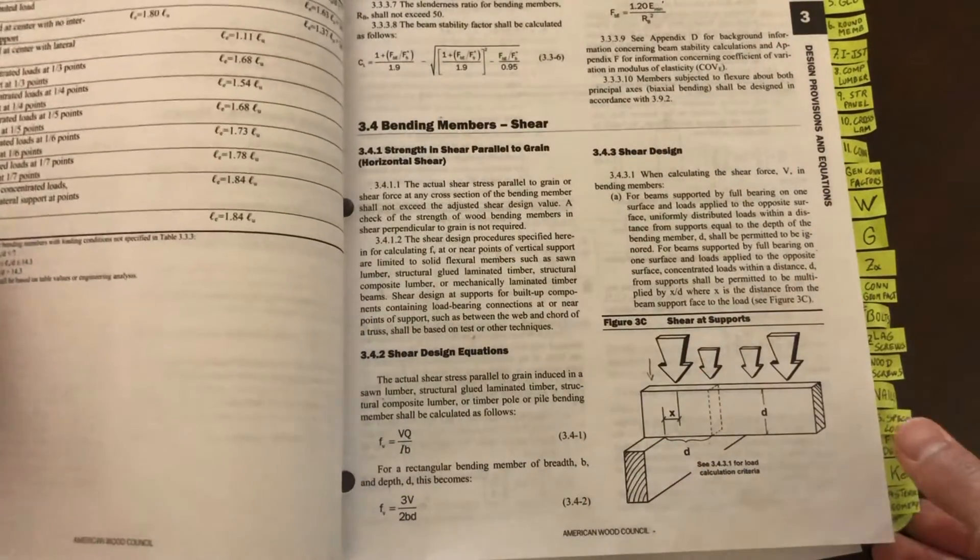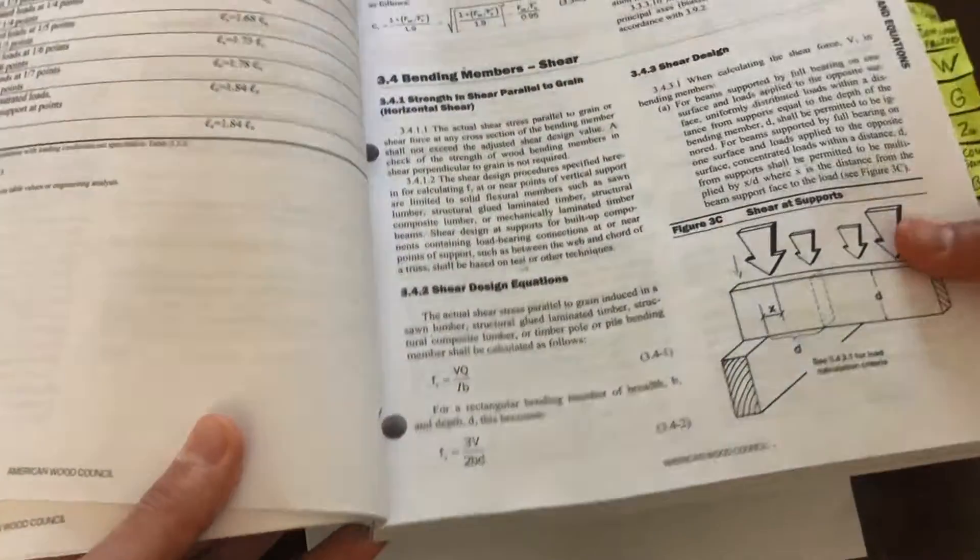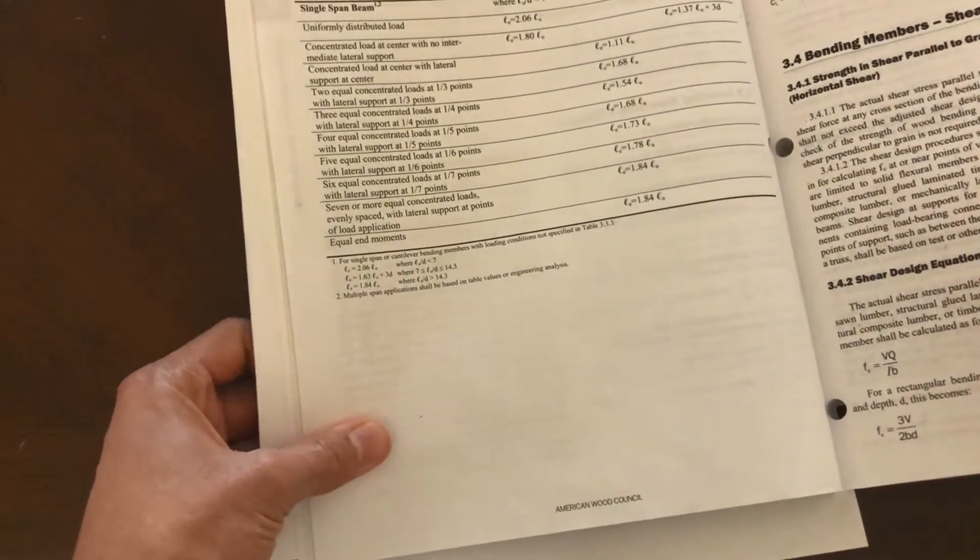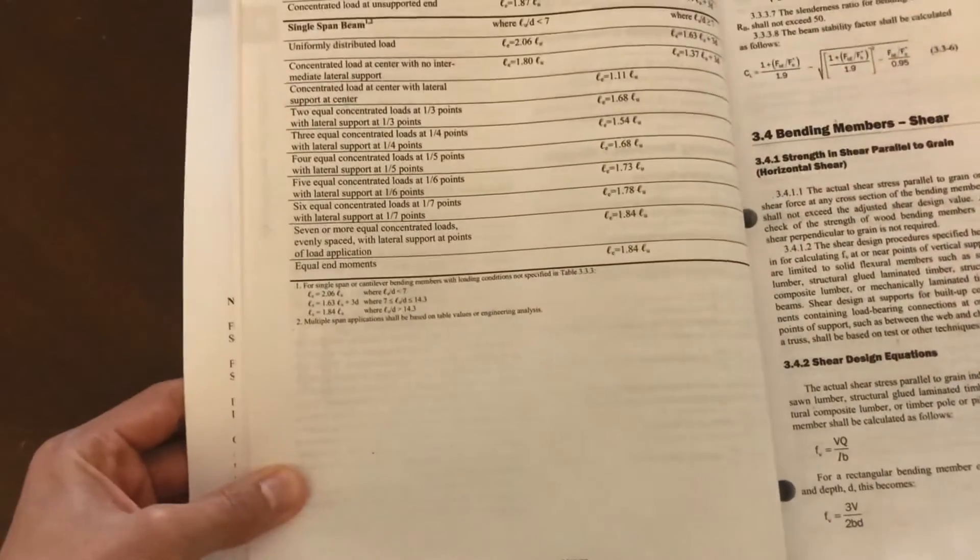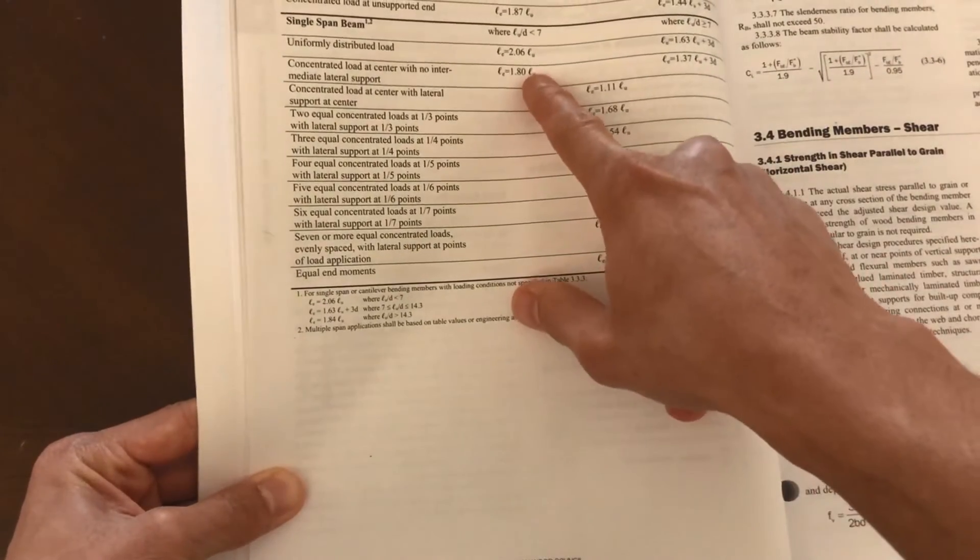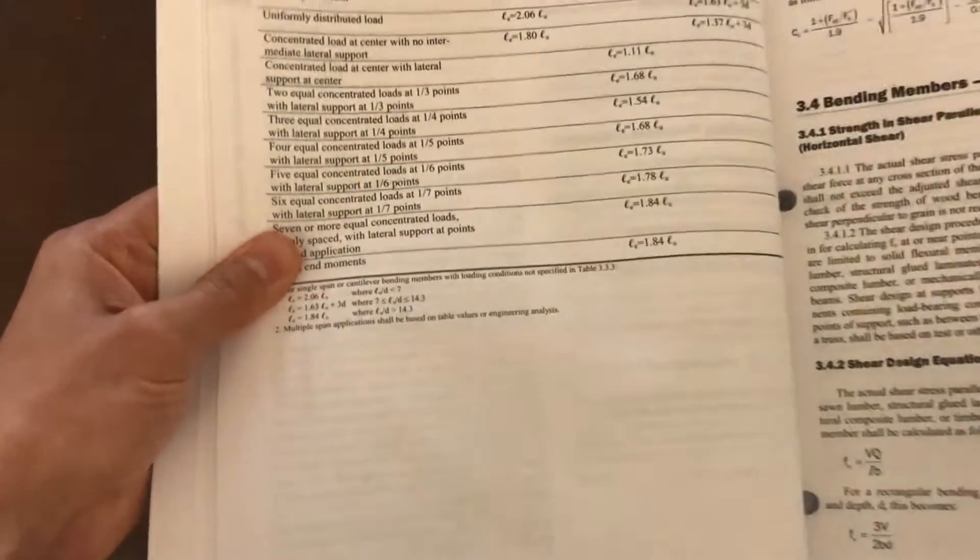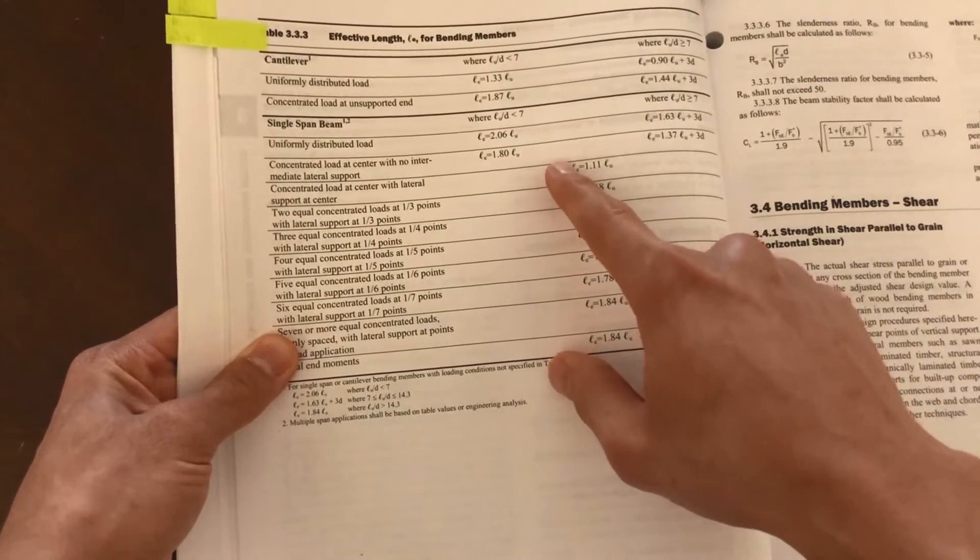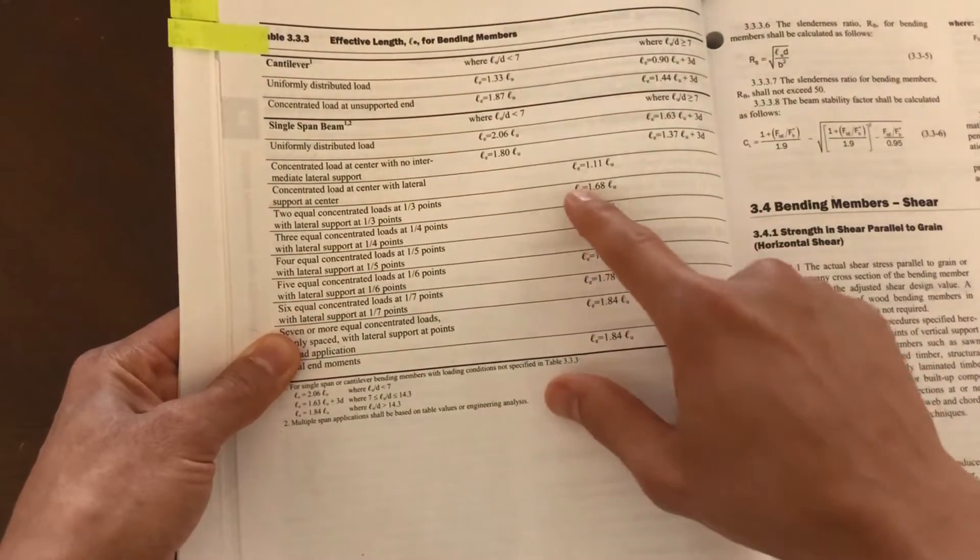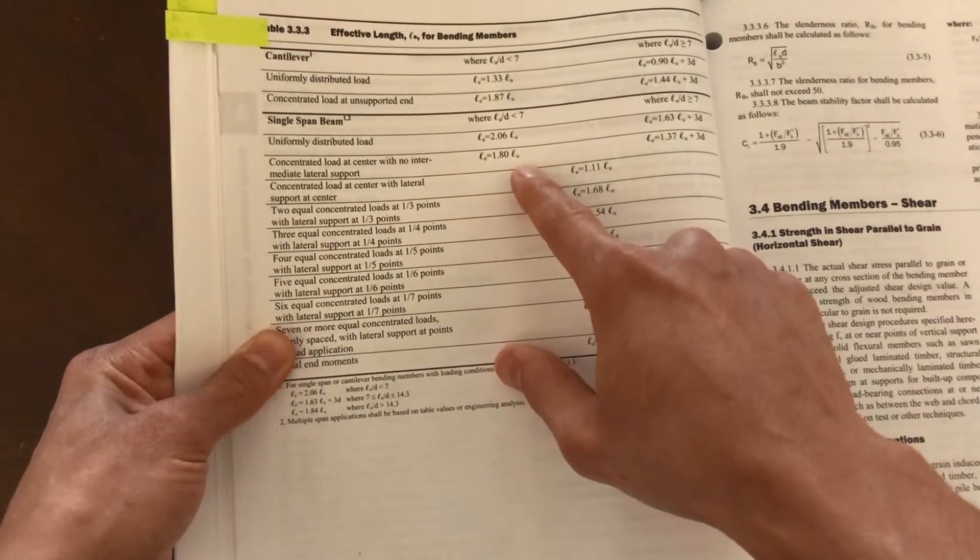For that, we need to find two lengths. The first length that we need to find is the unbraced length L U, which is from this table here. L U is the distance between bracing points. In this first case, we're going to run it as L U being equal to the span length, so L U is going to be equal to 16 feet each.